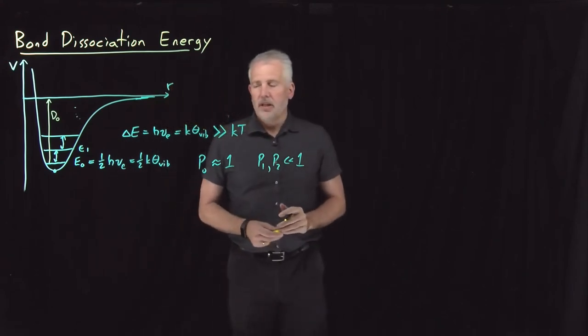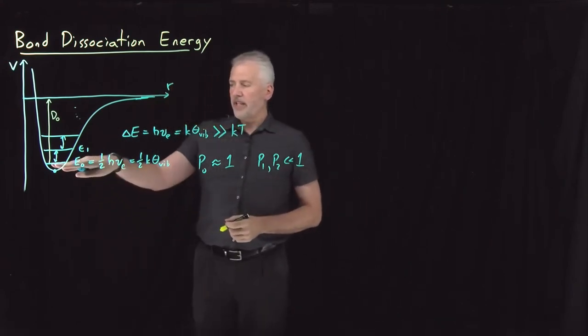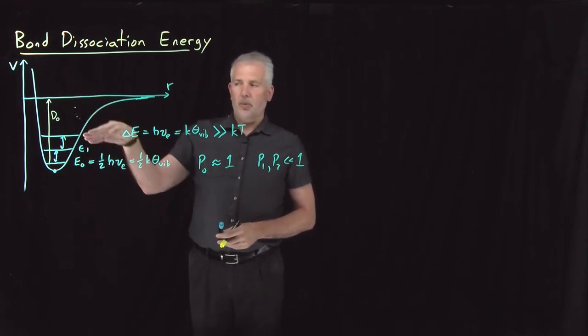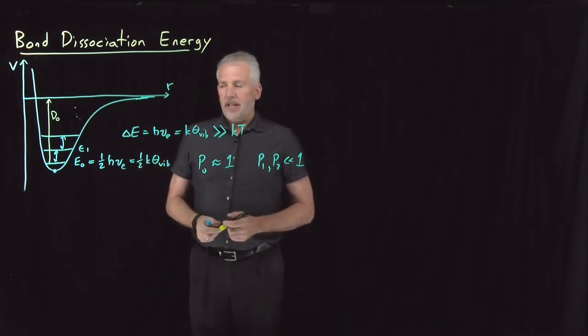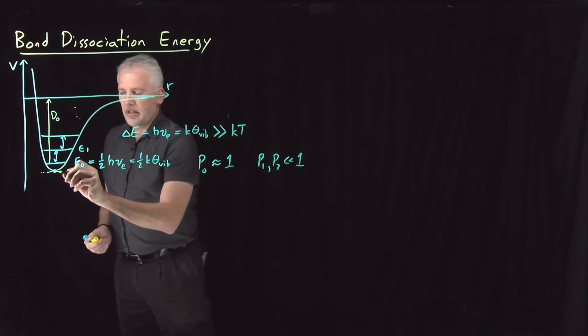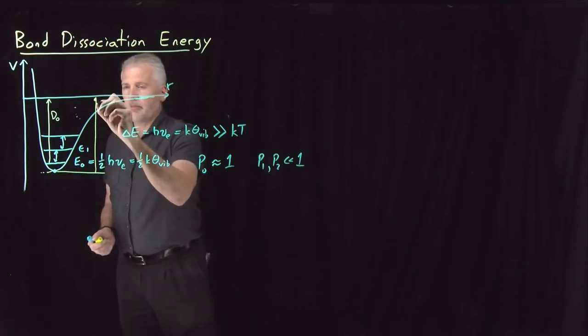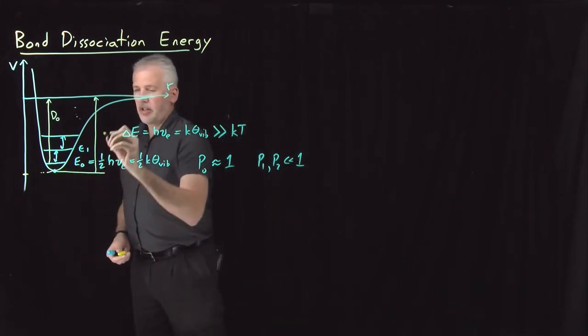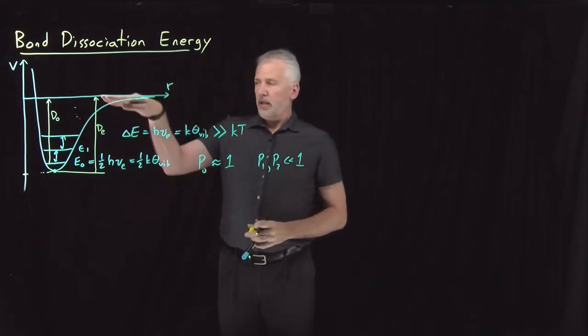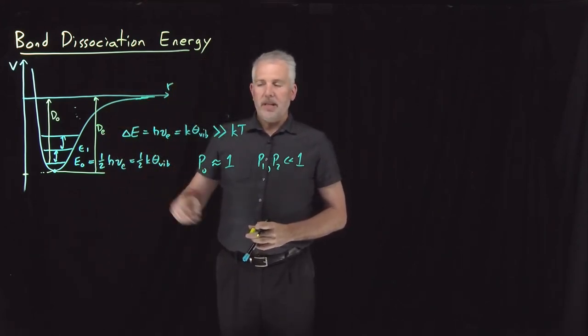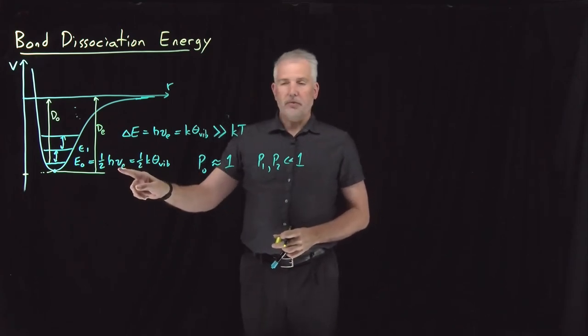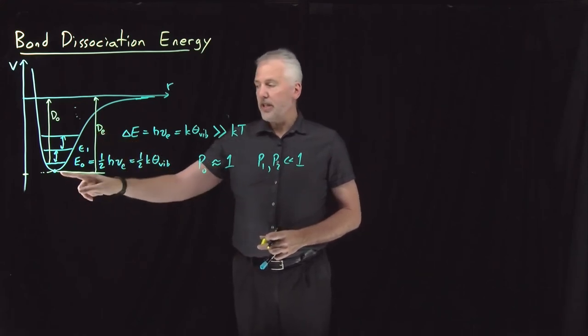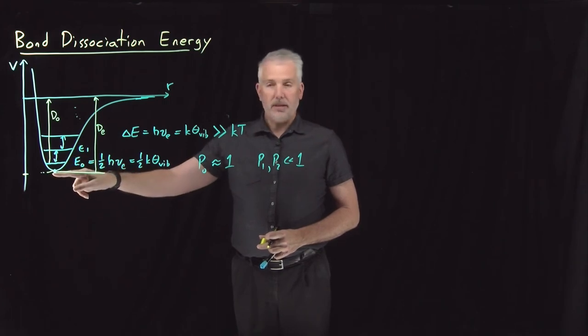What that means is if I want to break the bond for this molecule, this bond dissociation energy that we call D-naught is the energy it takes to get from the ground state, E-naught, up to the dissociation limit, up to this energy that the molecule has when it's fully dissociated. We can contrast that to the energy that it would have taken if I were to dissociate all the way from the bottom of the potential energy well. This energy right here, the difference between the dissociation limit and that energy, we call D sub E. The E here stands for equilibrium. This is the dissociation energy from the very bottom of the well, from the equilibrium position at the bottom of the well.